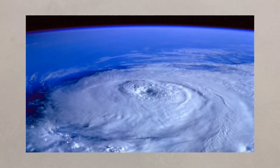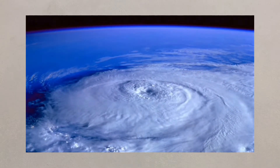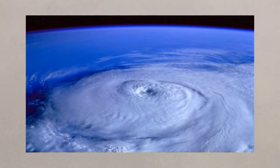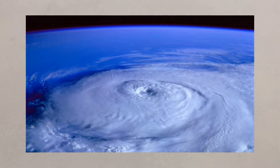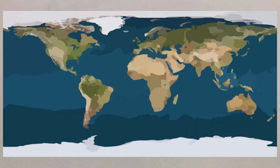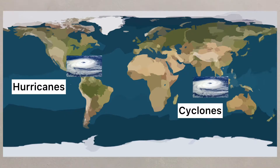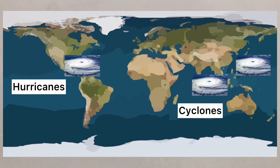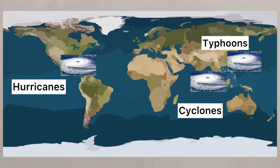Tropical storms are enormous, and, as the name suggests, they develop in tropical areas. They have different names according to where they develop, so near the USA and Caribbean they are hurricanes. Australia and Southeast Asia, they're cyclones, and around the Philippines and Japan, they're typhoons.